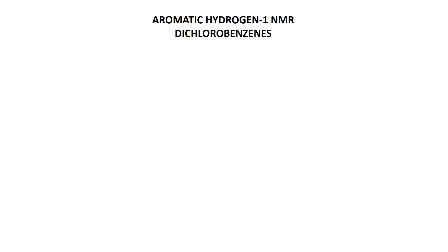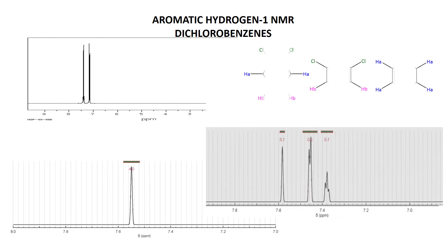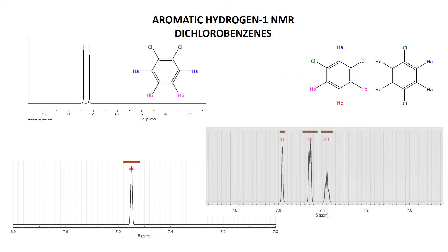Let's reveal the spectra. There are three spectra and three compounds. Starting with this one here — two distinct signals that look like two doublets. What has two signals that are doublets? The answer is 1,2-dichlorobenzene. Each HA is split by one adjacent proton, HB is split by one — two different proton types. I would venture that HA is the one further downfield because it's closer to the deshielding chlorine.